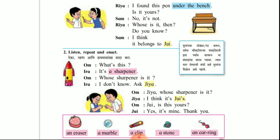Ira: I don't know. Ask Jaya. Om: Jaya, whose sharpener is it? Te kona cha sharpener ahe? Jaya: I think it's Zui's. Mala wat te — te Zui che ahe. Om: Jui, is it yours? He tujje ahe ka Zui?